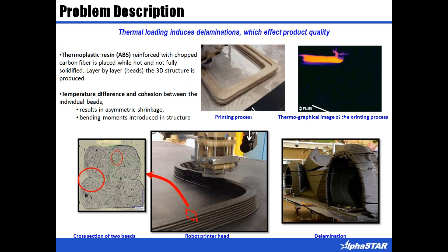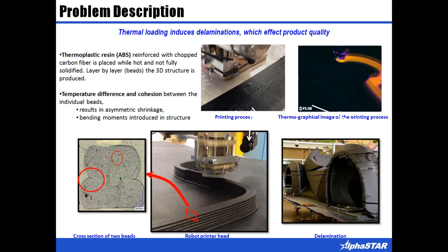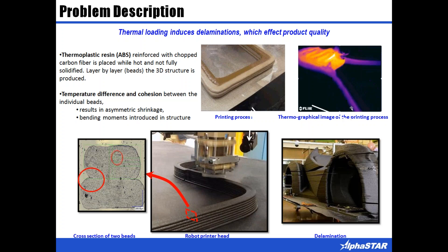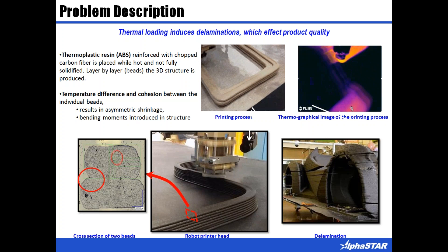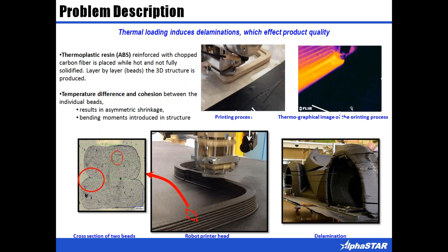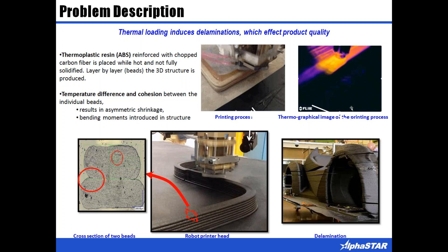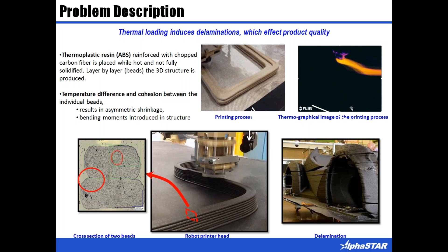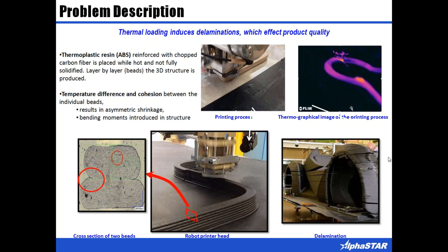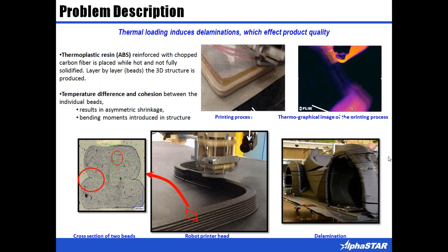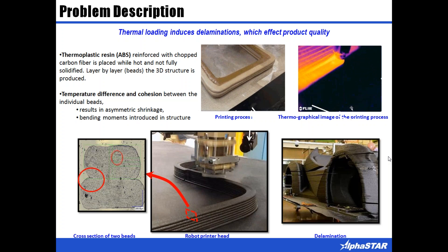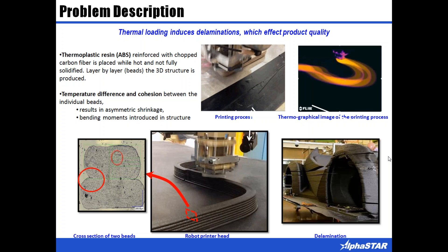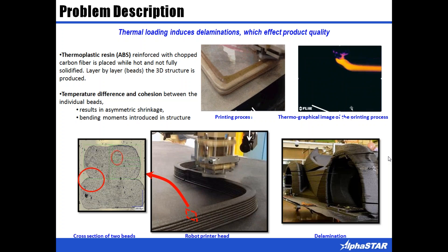As can be seen, one layer is deposited on top of another layer — these layers are referred to as beads. Consider the image of the two beads on the bottom left. After the first bead is deposited, it immediately begins to cool down; as the bead cools, it contracts and shrinks. When the second bead is placed on top of the first, it is much hotter than its predecessor, which results in significant temperature gradients between the two layers. These differences lead to deformations, contractions, and asymmetric thermal loading, which in turn triggers bending in the material, interlaminar stresses, and damage.